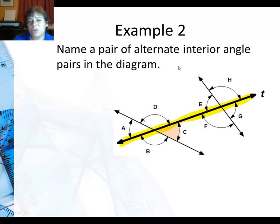Since it's alternate, that means I need to cross the transversal, but still stay between these two lines. So the angle that goes with that one is angle E. Angle C and E are alternate interior angles. Now see if you can find the other pair of alternate interior angles in this diagram.